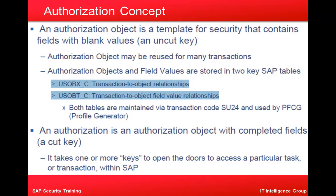Let's look at where authorization is stored. An authorization object is a template for security that contains fields with blank values — as long as we call something an authorization object, no value has been defined for it; those fields are incomplete. The transaction-to-object relationship is stored in a table called USoBX_C, and the transaction-to-object field value relationships are stored in USoBT_C. You maintain both of these via the transaction SU24.